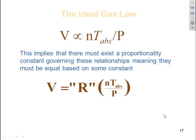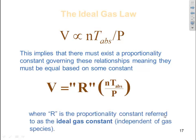So V is equal to some R, some constant that we're going to call capital R. Where R is the proportionality constant referred to as the ideal gas constant and is independent of the gas species.